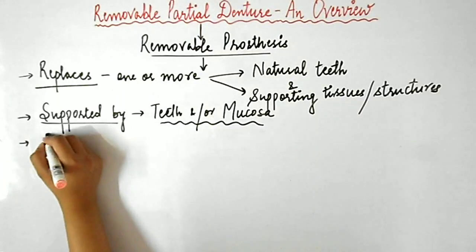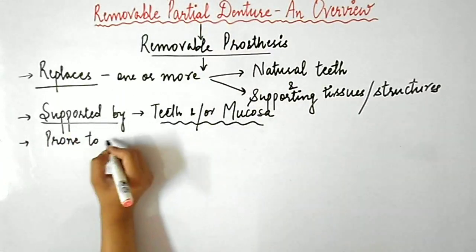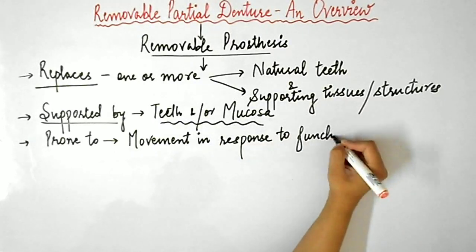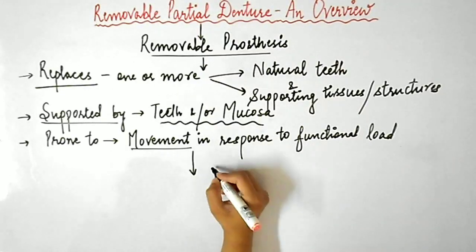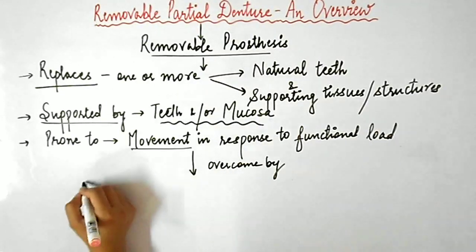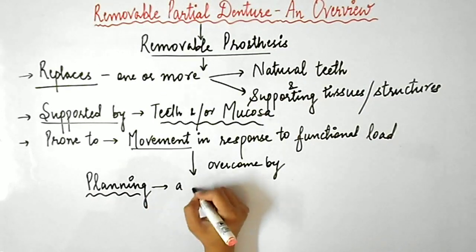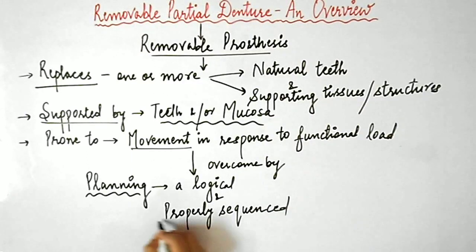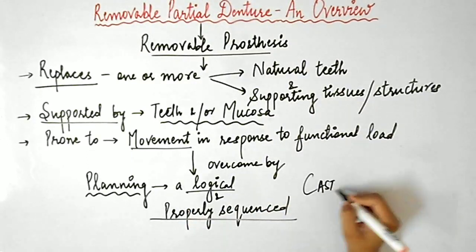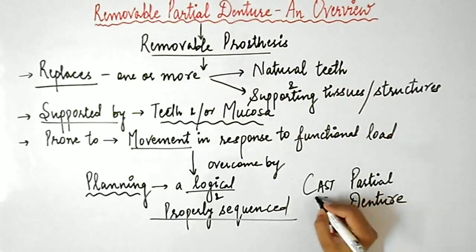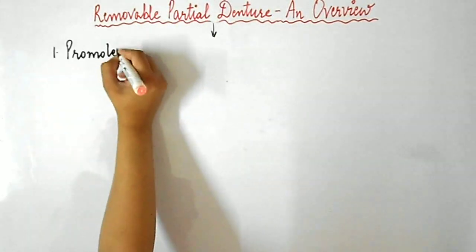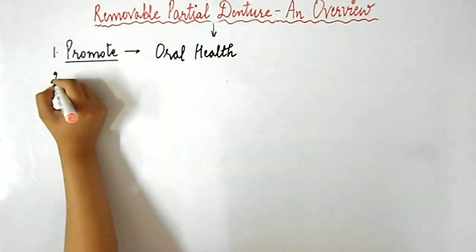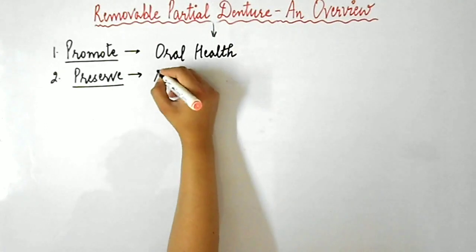It is not rigidly connected to the underlying tissues or teeth, making them prone to movement in response to functional load. These movements can be overcome by planning a logical and properly sequenced cast partial denture. This is possible only if you have thorough knowledge about the subject. This will help you provide a removable prosthesis to the patient which meets all the functional and social demands of the patient.